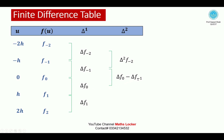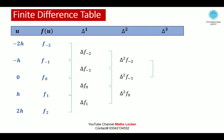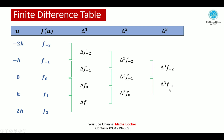For the second differences: delta f(0) minus delta f(−1) gives delta² f(−1), and delta f(1) minus delta f(0) gives delta² f(0). For the third difference: delta² f(−1) minus delta² f(−2) gives delta³ f(−2), and so on to give delta³ f(−1). Taking the fourth difference: delta³ f(−1) minus delta³ f(−2) gives delta⁴ f(−2).